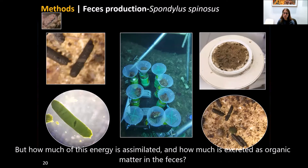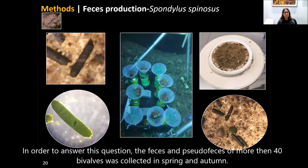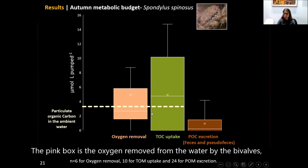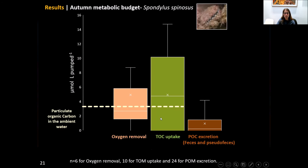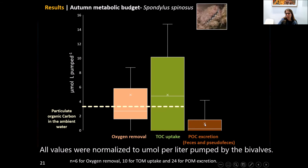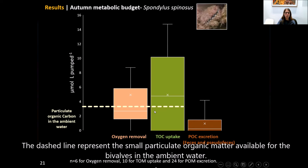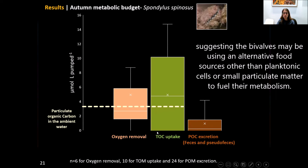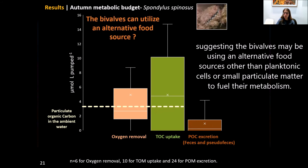But how much of this energy is assimilated and how much is excreted as organic matter in the feces? Feces from more than 14 bivalves were collected during spring and autumn. Here you see the overall metabolism of Spondylus spinosus during autumn: the pink box is oxygen removed from the water, the green box is organic carbon uptake, and the brown box is particulate organic carbon excreted as feces. All values were normalized to micromoles per liter pumped. The small particulate organic matter available cannot account for the high bivalve respiration or total organic matter uptake, suggesting use of an alternative food source.